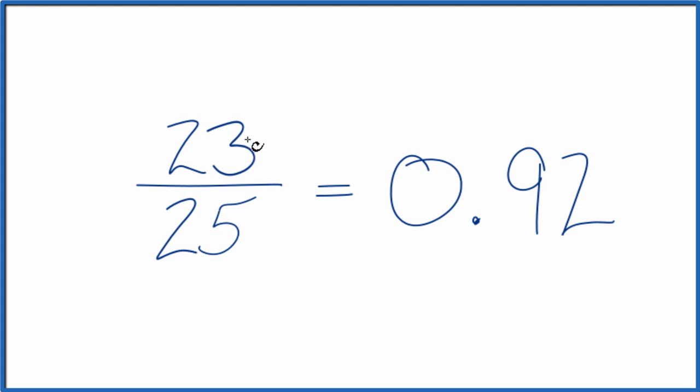So the fraction 23 over 25, that equals a decimal, 0.92. They're the same thing. They have the same value, it's just that we've written this differently.